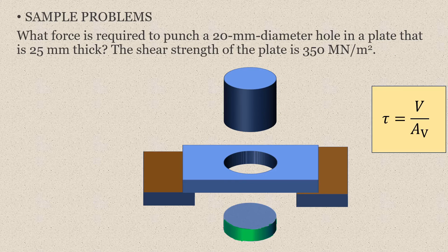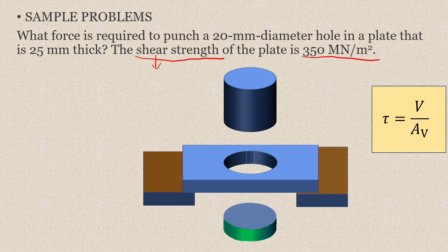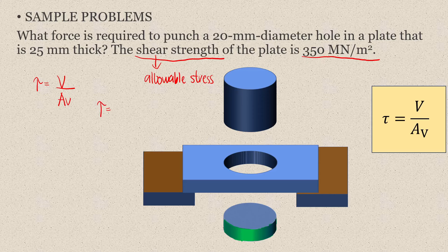To better understand these concepts, we'll solve a problem. For our first problem, we are asked: what force is required to punch a 20mm diameter hole in a plate that is 25mm thick? We are given the shear strength of the plate, which is 350 MN/m² (which is just MPa). Shear strength is the allowable stress for shear. So we have tau equals shear force divided by shear area, where tau is 350 MPa or 350 N/mm².